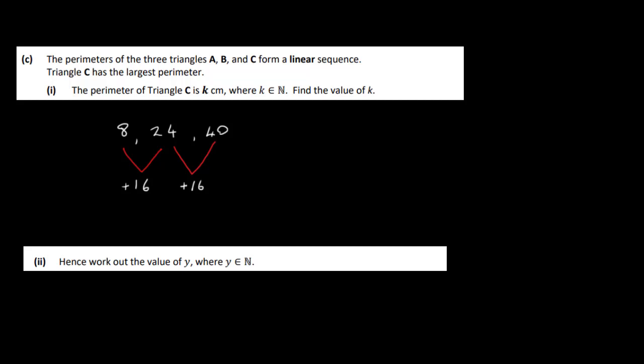The perimeter for triangle C is k centimeters. Find the value of k. Our answer then would be k equals 40 centimeters. That's it for that part.